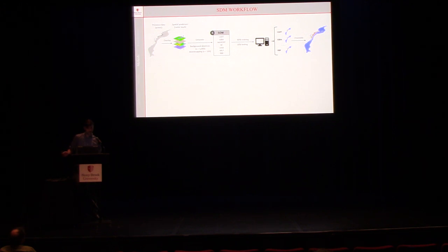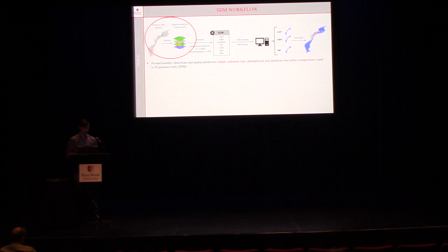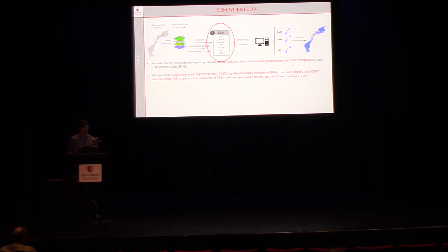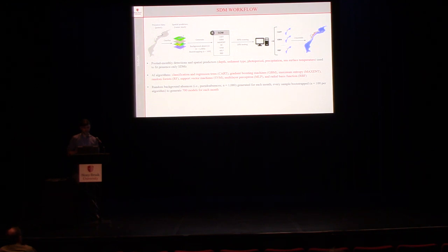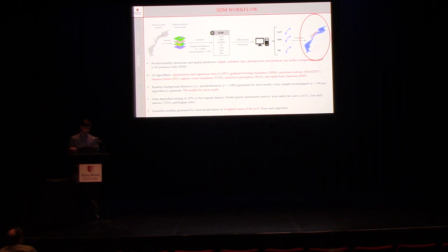This is the workflow for creating a monthly ensemble map of occurrence for these fish. We have our presence points, our spatial predictors, and the AI algorithms we're using — a mixture of machine learning and artificial neural networks, seven in total. For each of those AI algorithms for each month, we bootstrap them 100 times, so every single monthly ensemble is based on 700 total models. We do a model quality assessment, specifically using area under the curve to weight our final ensemble models.